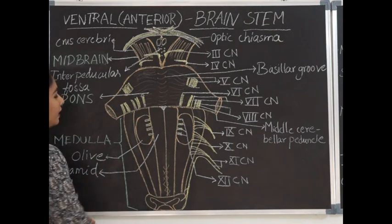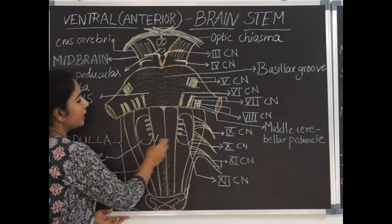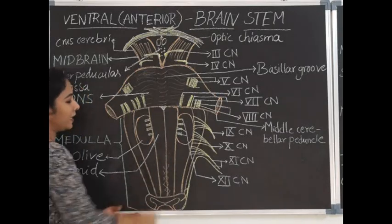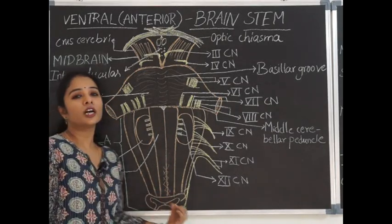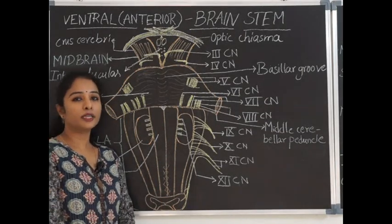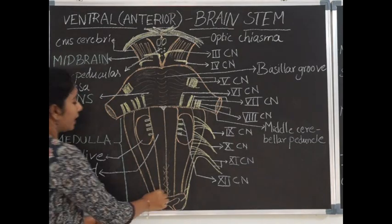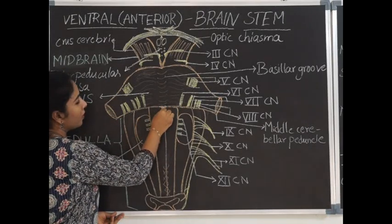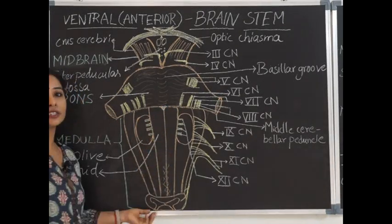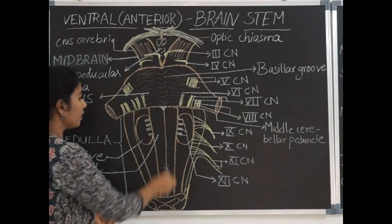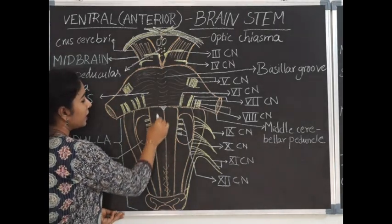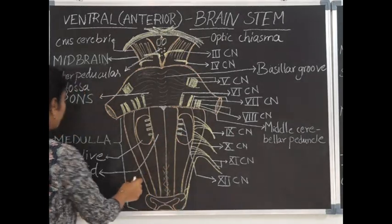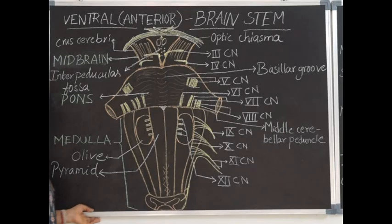Anteriorly, the medulla oblongata is divided into two halves by means of a median fissure called the anterior median fissure, which continues down as the anterior median fissure of spinal cord. The anterior median fissure ends up between the pons and medulla forming the foramen cecum, which is a blind groove. On either side of the anterior median fissure, there are two longitudinal elevations called pyramids.